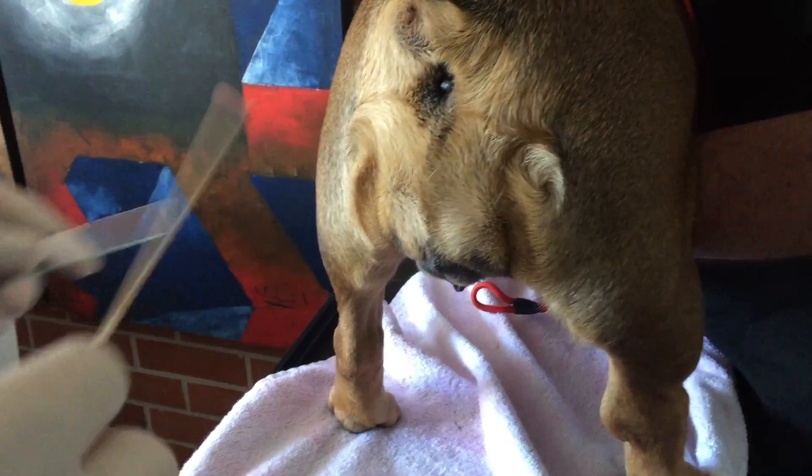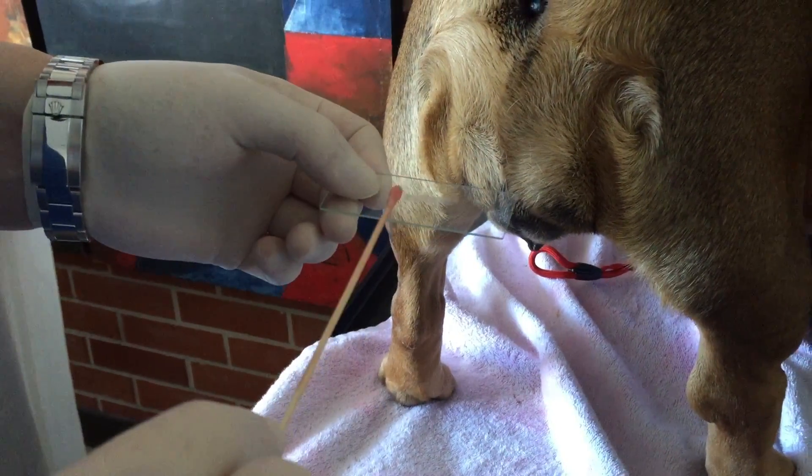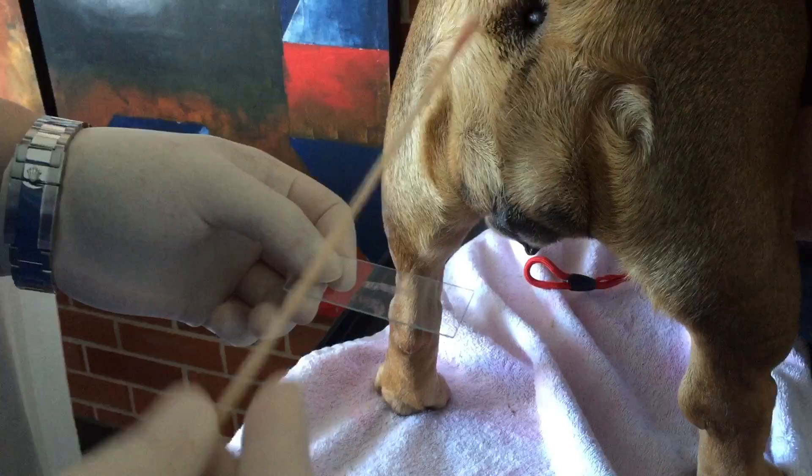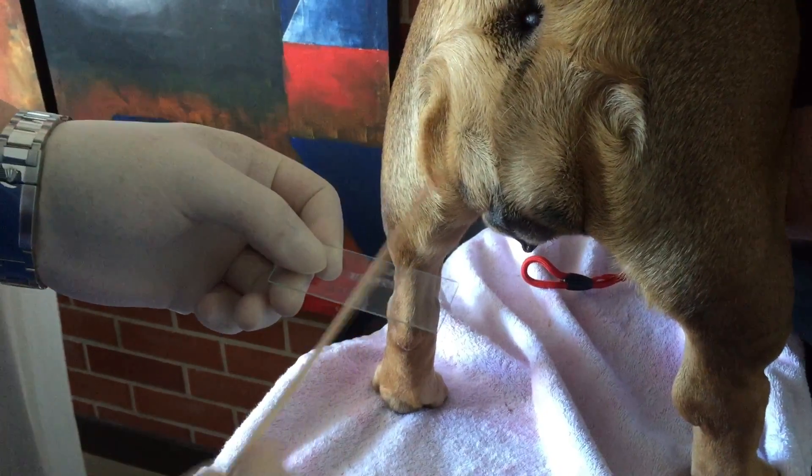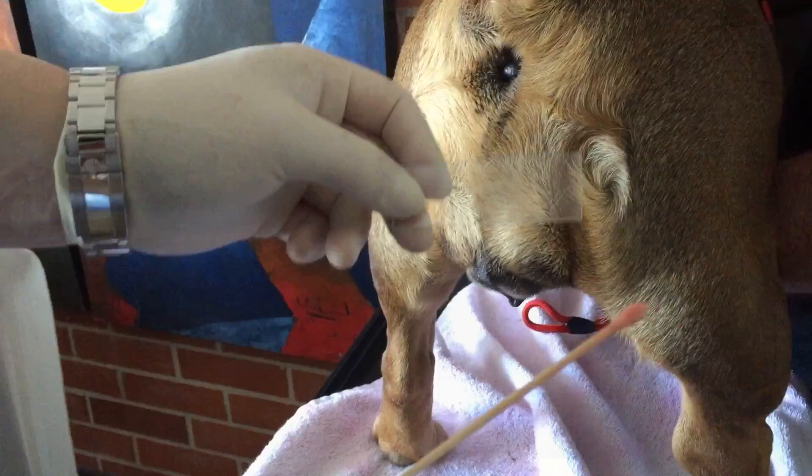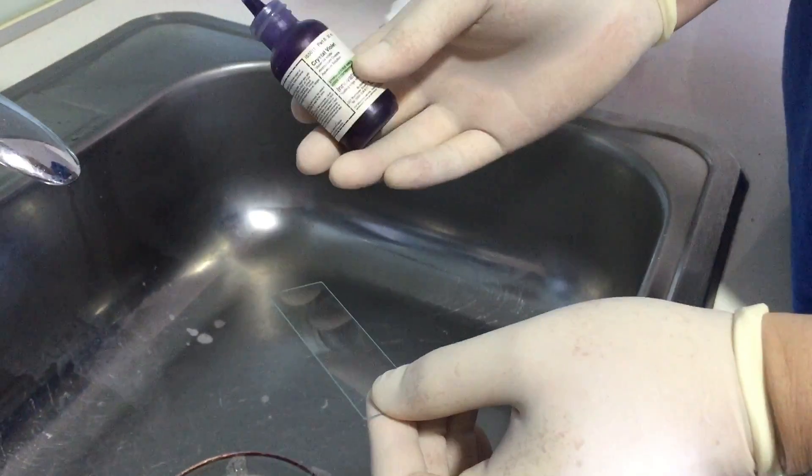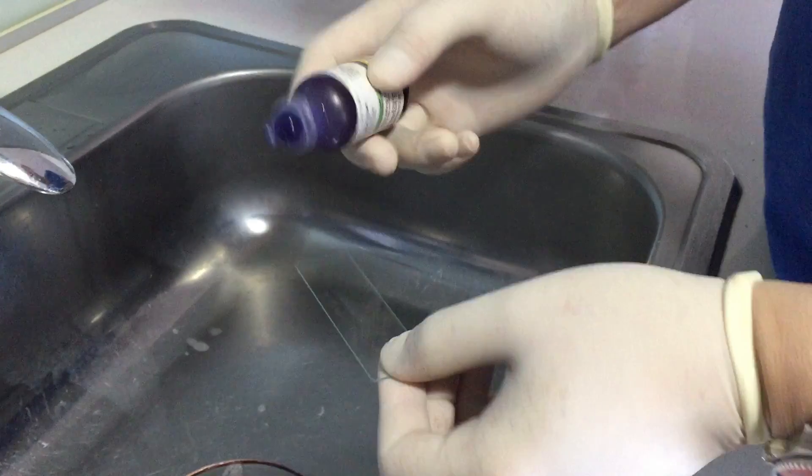We're gonna put this on the glass. Alright, let's go stain this. Okay, again I'm using gram stain. The method is, first thing you use is crystal violet.